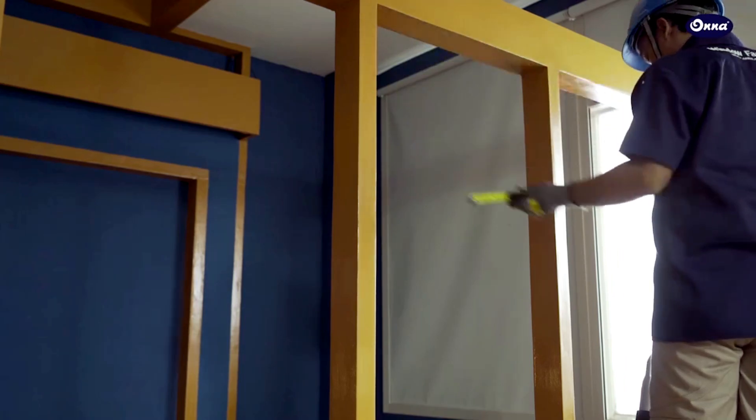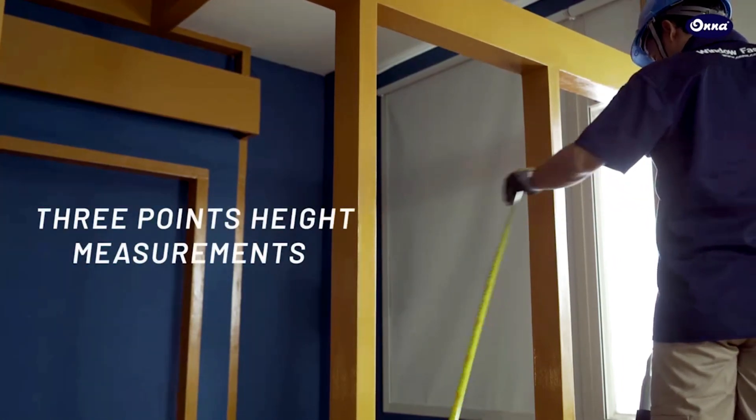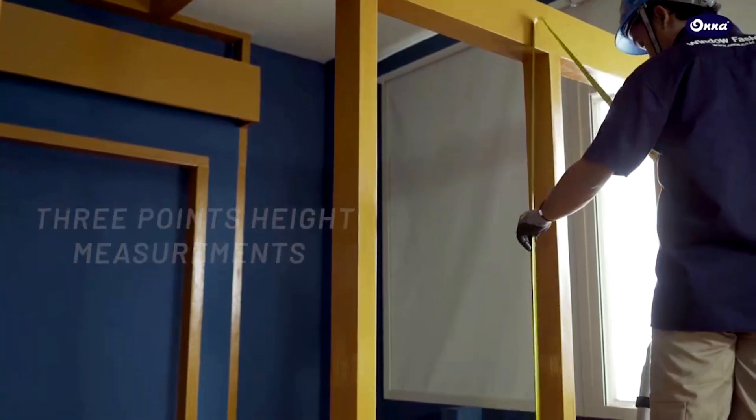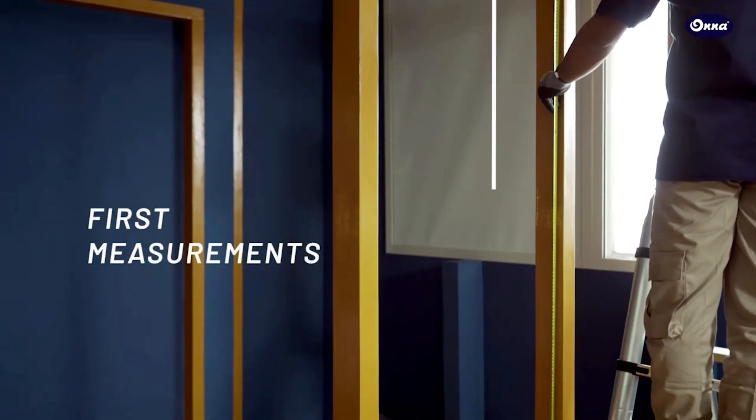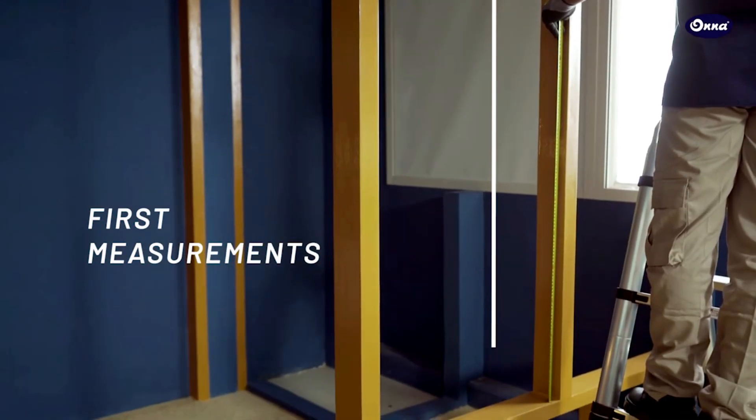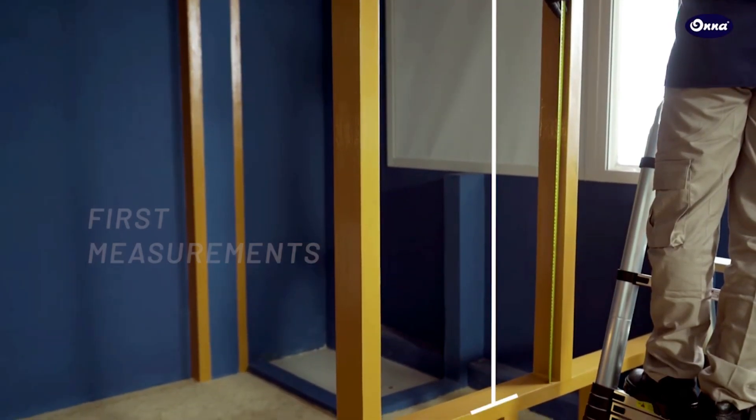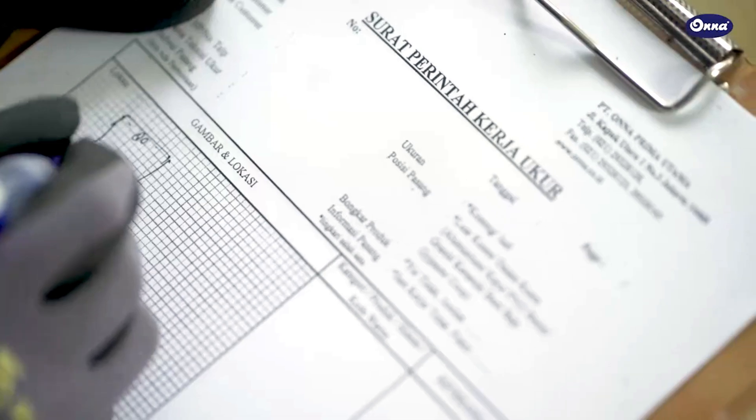Three-point measurements include width and height. Starting from the left side to the right side for three-point width measurements and from bottom to top for three-point height measurements. Each measurement at the first point is immediately recorded and then continued to the next point.